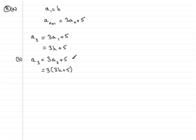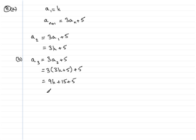Then add the remaining 5 on the end. We can expand the bracket: 3 times 3k is 9k, and 3 fives are 15, and then you have the 5 on the end, making a final total of 9k plus 20. So the third term in the sequence, A3, is 9k plus 20.